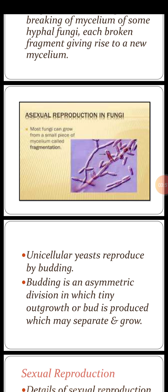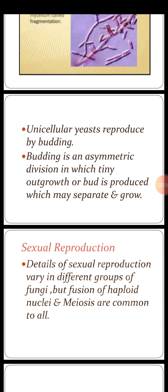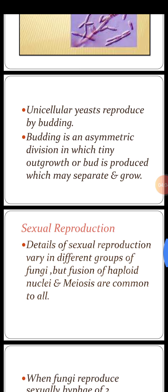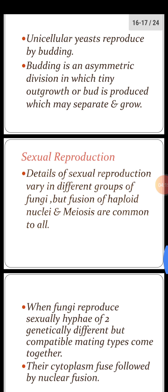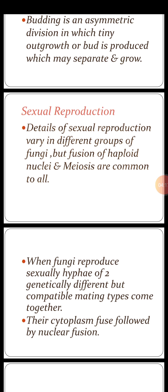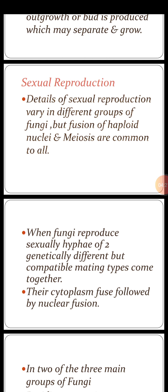This process is called fragmentation. Unicellular yeasts reproduce by outgrowths called buds, and the process is called budding. Budding is an asymmetric, irregular division in which tiny outgrowths or buds are produced, which may separate from the parent and then grow.